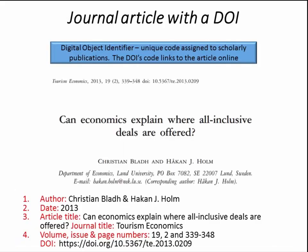Many online scholarly journal articles have a DOI, which stands for digital object identifier. They were created because all content on the internet is prone to being moved, restructured, or deleted, which results in broken hyperlinks and non-working URLs. The DOI is a unique number that provides a persistent link to the article's location on the internet. So if your article has a DOI, use it in your reference list.